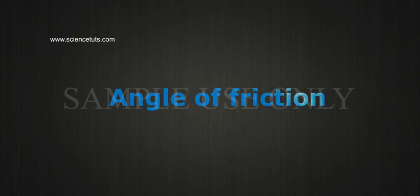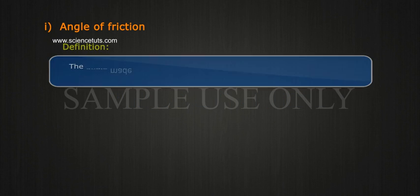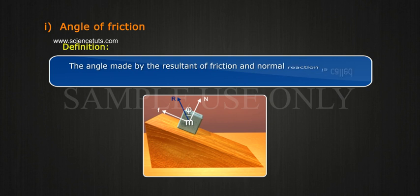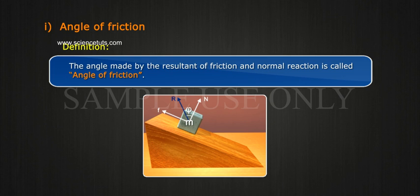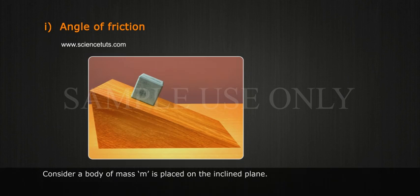Angle of friction. The angle made by the resultant of friction and normal reaction is called angle of friction. Consider a body of mass M placed on the inclined plane.